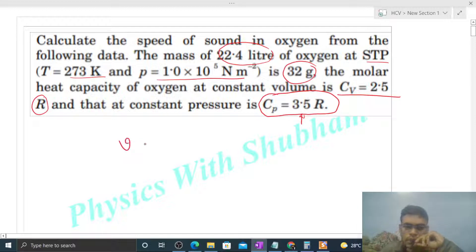So what is the formula for speed of sound wave in any medium? That is under root of B by rho, B is bulk modulus of the medium and rho is the density of the medium.